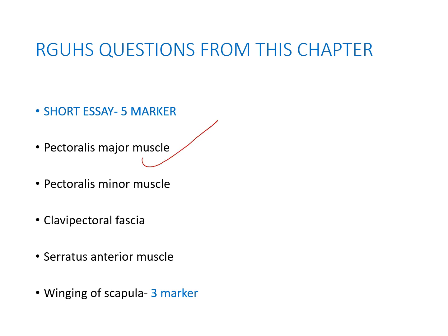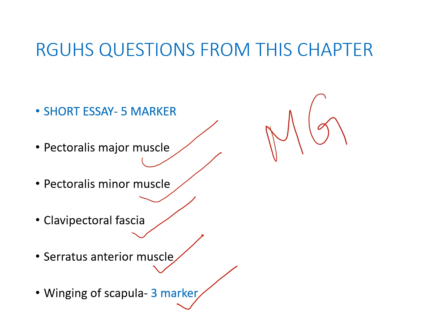The frequently asked topics are: pectoralis major muscle, pectoralis minor muscle, clavipectoral fascia, serratus anterior muscle and winging of scapula. Mammary gland is also a very important question — a very important 10-marker — which we will be discussing in our coming classes.